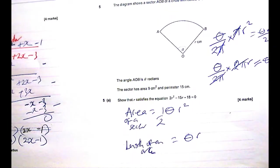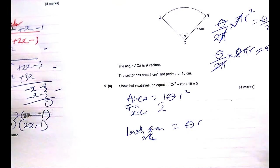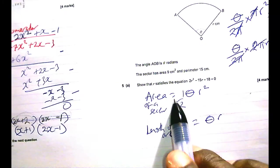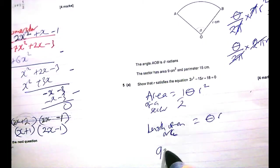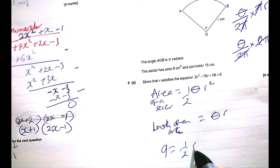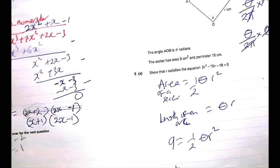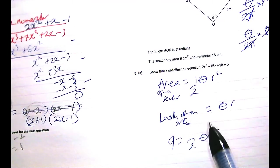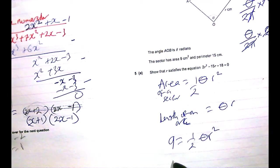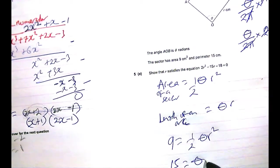But you may as well just remember it now, because you are now doing A levels. So, given this, we can say that 9 equals half θR². And from the second one, we can say that 15 equals θR.